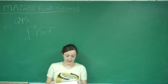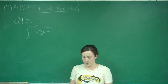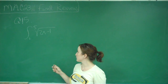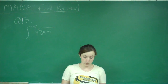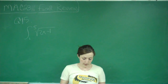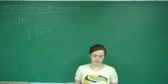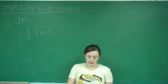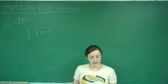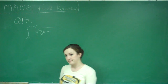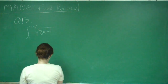For question number 15, they ask us to approximate the value of the definite integral — the integral from 1 to 5 of the square root of 2x minus 1 — by using a Riemann sum with four subintervals. It says to use the midpoint of each of the rectangles.